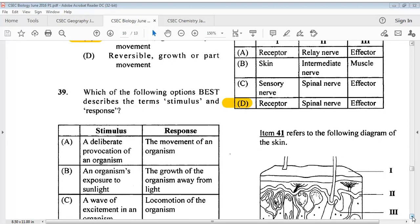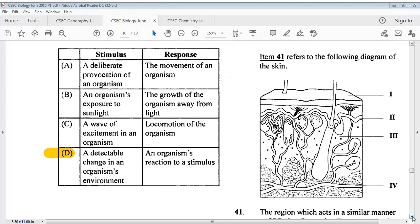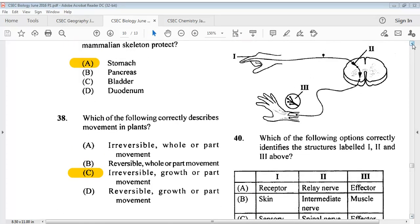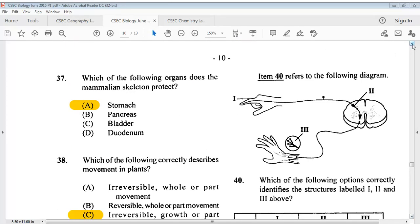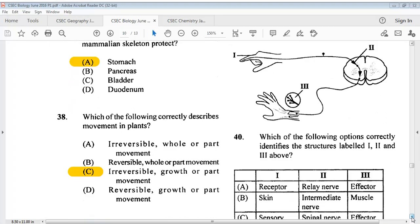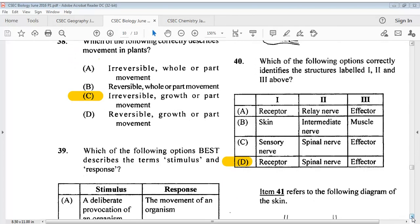Question 39, which of the following options best describes the terms stimulus and response? The answer is D. For question 40, item 40 refers to the following diagram. It says which of the following options correctly identifies the structures labeled 1, 2, and 3 above? Our answer is D.